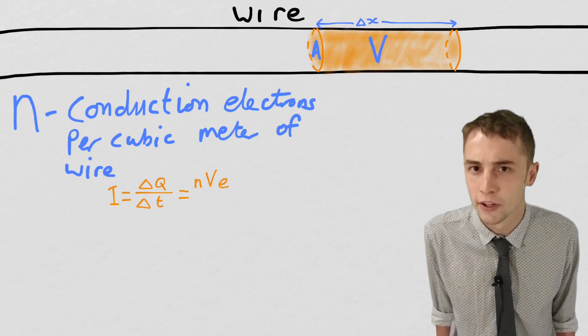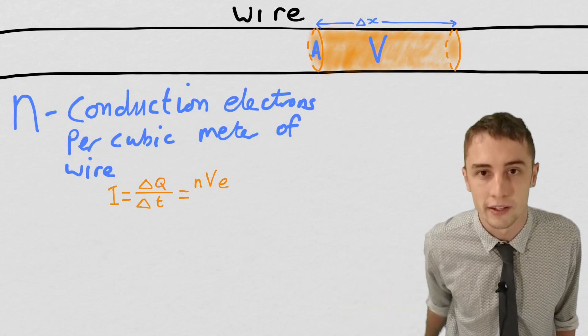And if we want to work out the current, we just take that total charge and we divide it by time t.